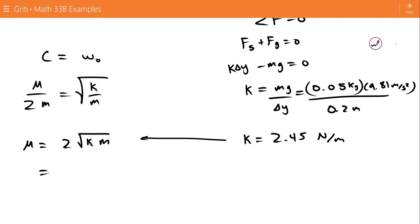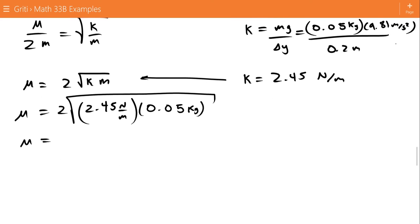Since we found k, we can plug that in: 2.45 newtons per meter. And the mass was 0.05 kilograms. Plugging that in, we find that mu for critical damping is 0.7 newtons per meter.